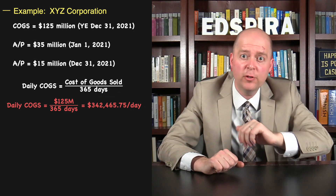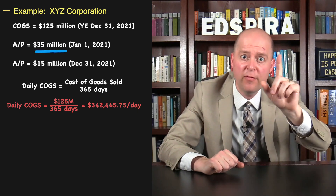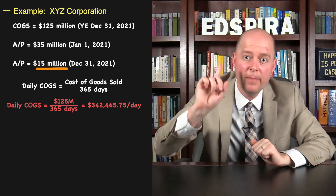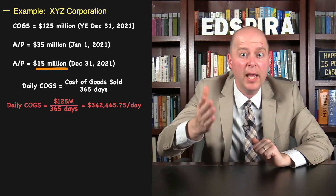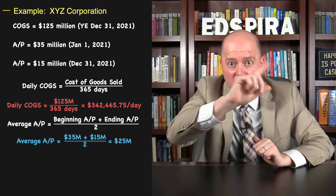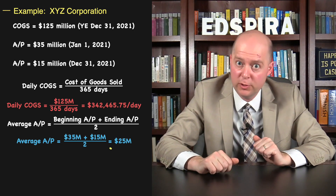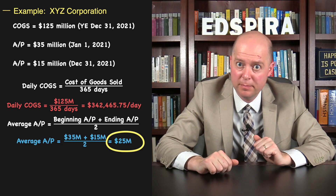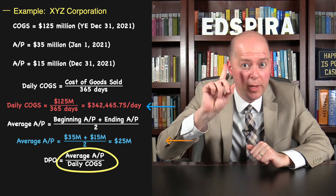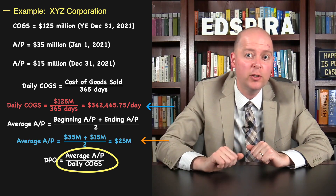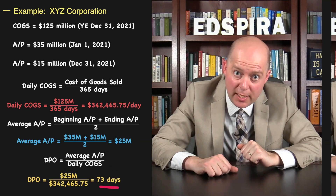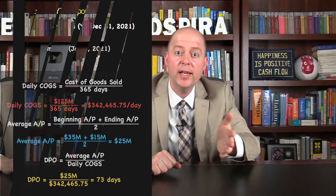The company reported accounts payable of $35 million as of January 1st, 2021, and $15 million as of December 31st, 2021. So its average accounts payable was $25 million. Now that we know the company's daily Cost of Goods Sold and its average accounts payable balance, we can calculate Days Payable Outstanding.